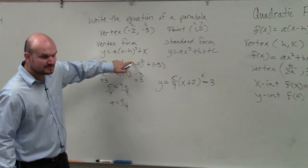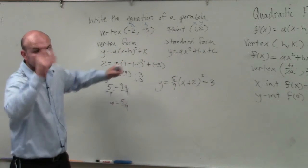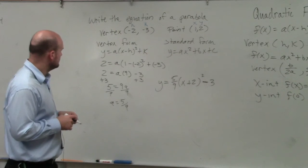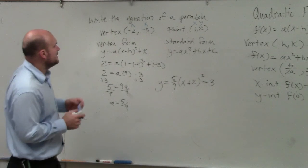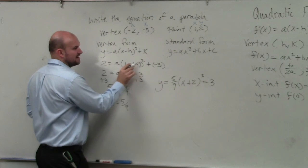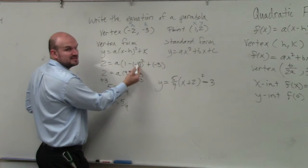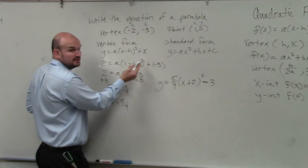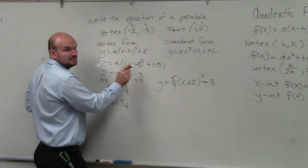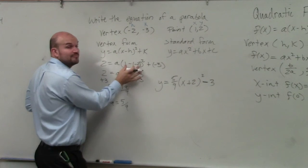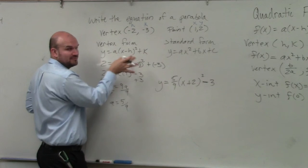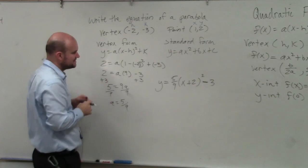Remember, it's x minus h. A student asks how we got that, since 2 squared might cause confusion. Remember, there should be an extra parenthesis — you have to do inside the parenthesis first before you square it. So it's 1 minus a negative 2. PEMDAS — you have to do the parenthesis first. This is inside the parenthesis.